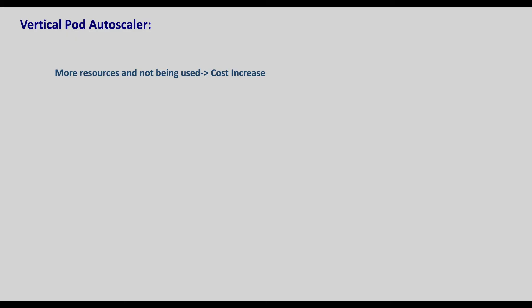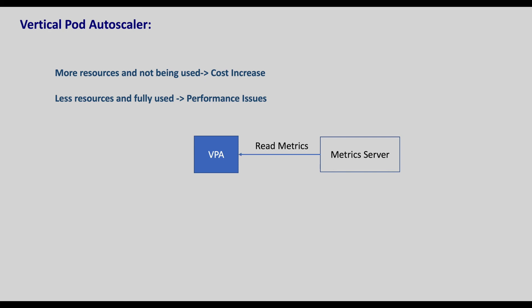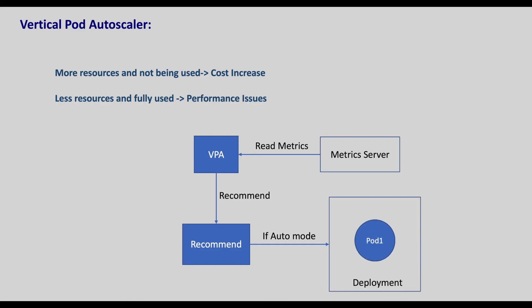Now let's look at the vertical pod autoscaler. Vertical scaling means increasing or decreasing the compute resources of a replica. Without vertical pod autoscaler, if we over-allocate resources with requests and limits, our cost increases if they are not fully used. And if we under-allocate the resources and they are full, our application performance will suffer and the kubelet may kill the pods. Vertical pod autoscaler helps us solve these two issues. It performs three steps: first, it reads the resource metrics of our deployment similar to the HPA; based on these metrics, it recommends the resource requests; and if we prefer to auto-update it, it updates the resources. If you are new to resources and limits, please watch the resource management chapter of this series.